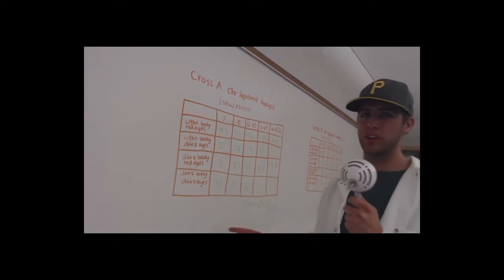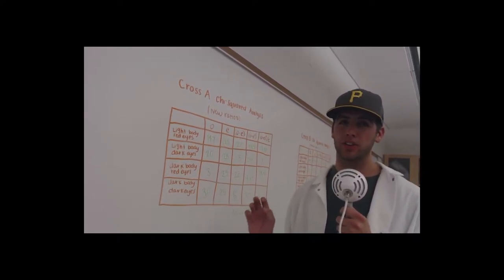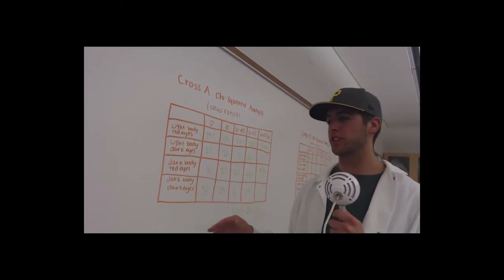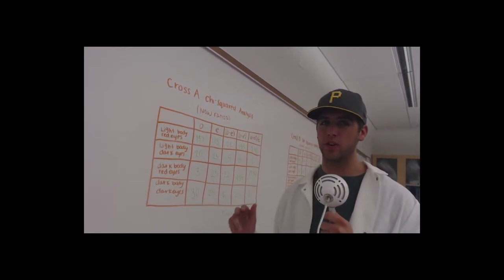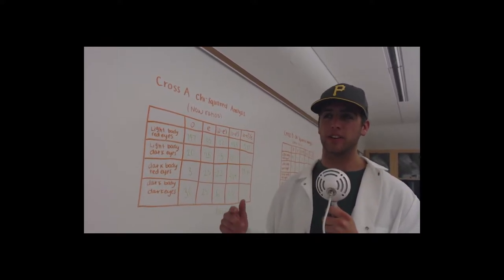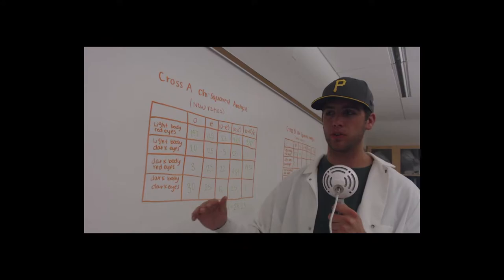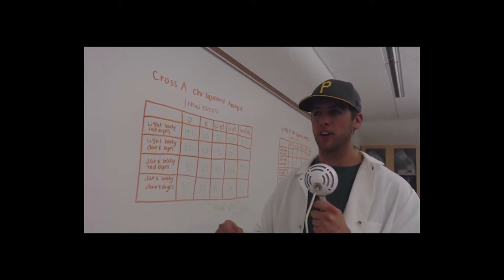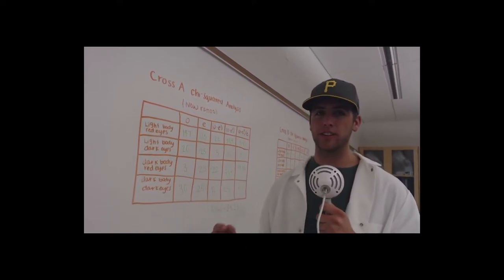Okay, so our chi-square analysis for Cross A gave us a total value of 25.23, and this 25.23 correlates to a very low p-value, which led us to reject our null hypothesis. And that null hypothesis, well our new one from our five to one to one to one ratio, was that the genes are dependently linked to each other.